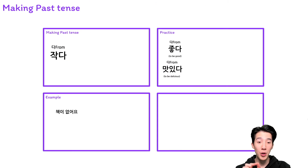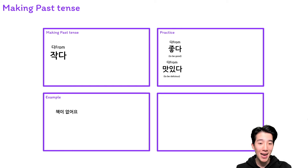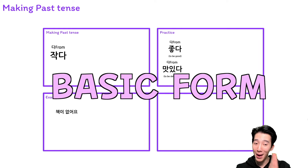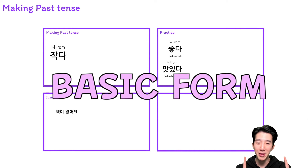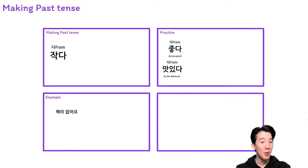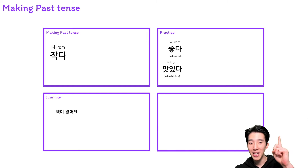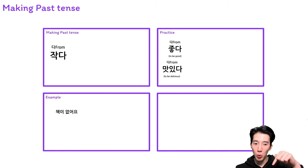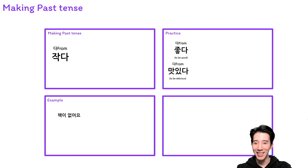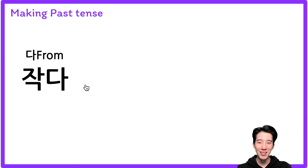So we're going to make the past tense together. But when we make the past tense, we have to know about the basic form first. For learning the basic form it takes time — I'm going to put the card here and I'm going to put the link below. Please check that one. Okay, so let's make the past tense.